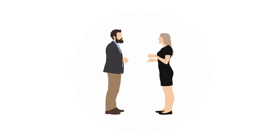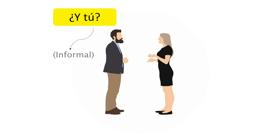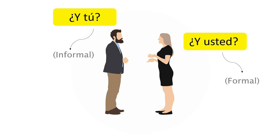So after you indicate how you are doing, you may want to ask the other person how he or she is doing, and you can do this by simply saying "and you?" So in Spanish, ¿Y tú? which is informal, and ¿Y usted? which is formal.